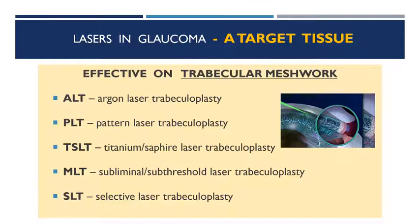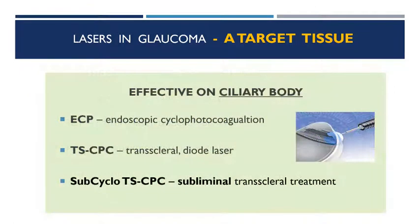In the trabecular meshwork group, we have the old traditional ALT — argon laser trabeculoplasty — and some newer methods like PLT and titanium sapphire laser trabeculoplasty. But most common today are MLT, subliminal laser trabeculoplasty, and SLT, selective laser trabeculoplasty. The other tissue of interest is the ciliary body. You can target it during endoscopic access, like ECP — endoscopic cyclophotocoagulation — or in an outpatient clinic, like TSCPC, or the newer subliminal SubCyclo TSCPC.